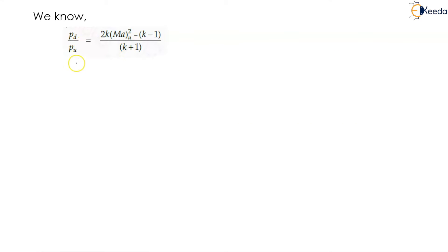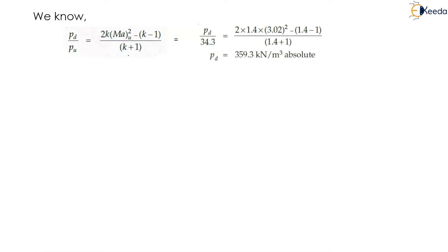We know PD upon PU is given by 2K times Ma squared minus (K minus 1), all divided by (K plus 1). Substituting all values: pressure downstream upon 34.3 equals 2 times 1.4 times 3.02 squared minus (1.4 minus 1), divided by (1.4 plus 1). So pressure downstream equals 359.3 kN per meter square absolute on the downstream side of the shock.